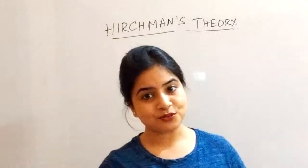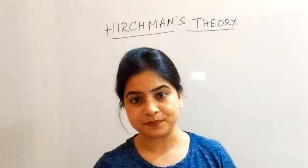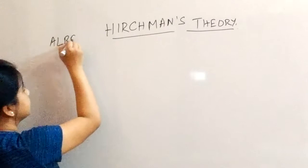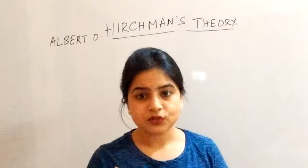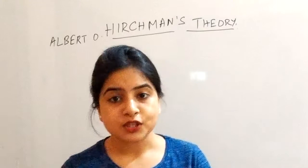Hello students, today we will discuss Hirschman's theory of development. His name is Albert O. Hirschman. So what he gave in his theory — this theory is basically Nurkse's theory, which is known as the balanced growth model.